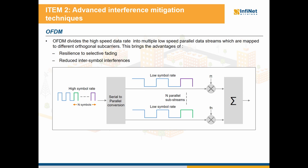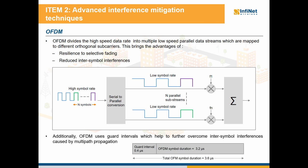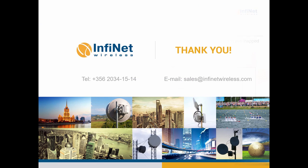The last interference mitigation technique we will discuss today is OFDM. OFDM splits the high-speed data rate into multiple low-rate parallel data streams, which are mapped to different subcarriers as we can see in the picture. This provides increased resilience against selective fading and greatly diminishes inter-symbol interferences. Additionally, OFDM uses a guard interval — we can see an example for the Infinite Wireless units' OFDM implementation — which will help to further overcome the effects of inter-symbol interferences caused by multipath propagation.